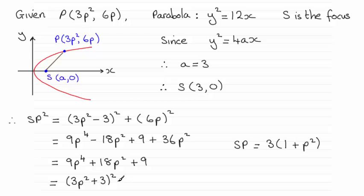So clearly, if you take the square root to both sides, you end up with SP equaling 3p squared plus 3. And if you pull out 3 as a common factor, you get the required result.